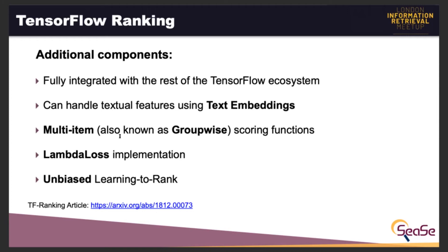The TensorFlow Ranking library is also able to take advantage of the feature engineering functionality of TensorFlow, enabling the handling of textual features using text embeddings. Models built on standard learning to rank approaches score documents using a univariate function, which does not factor in the relevance of other documents in a result list. Multi-item scoring involves using a multivariate scoring function to produce an ordering of an entire result list. The library supports a novel scoring mechanism known as a group-wise scoring function, wherein multiple items can be scored jointly.